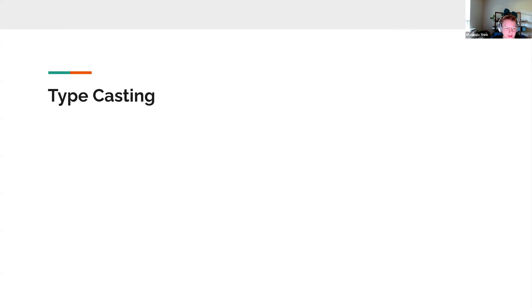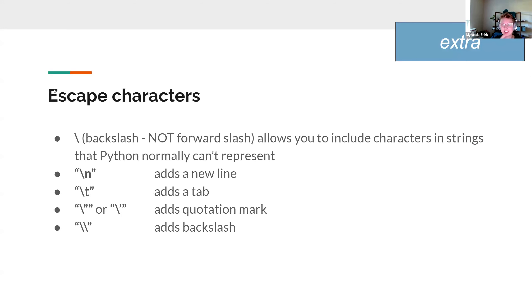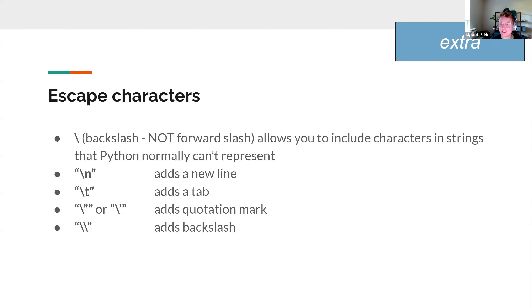Here's something extra with strings — you don't have to memorize this, I just want to mention it. There is something called an escape character that you can include in a string. This allows you to include characters that Python normally can't represent, such as a new line. The backslash is what allows you to use these escape character shortcuts for including special characters in your strings. We're not going to be using escape characters just yet.